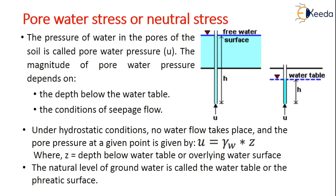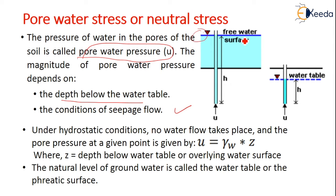Coming to the pore water stress or the neutral stress — the pressure of water in the pores of the soil is nothing but the pore water pressure, denoted by the letter u. The magnitude of pore water pressure depends mainly on the depth below the groundwater table or the conditions of seepage flow. This is the water table, also called the free water surface.